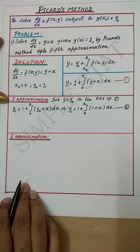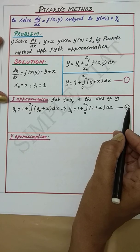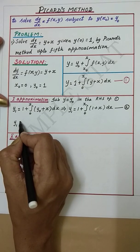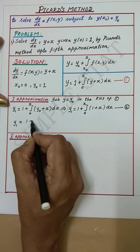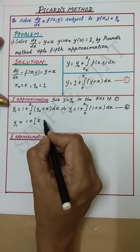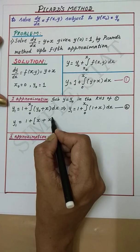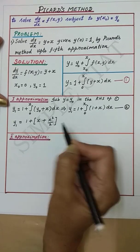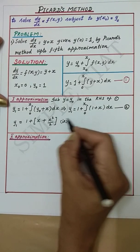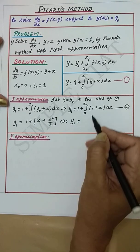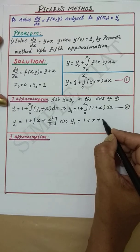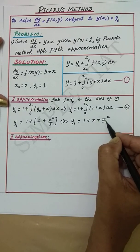Now integrating equation 2 and substituting the limits, we get y₁ equal to 1 plus x plus x² by 2. That is, y₁ equal to 1 plus x plus x²/2.